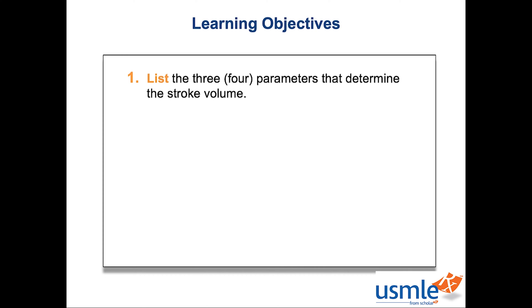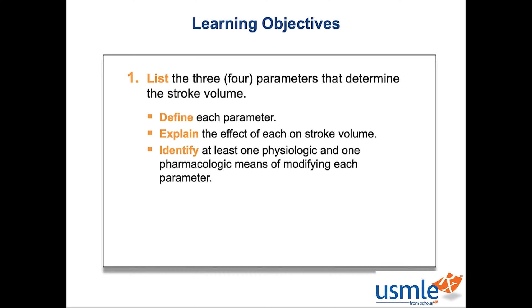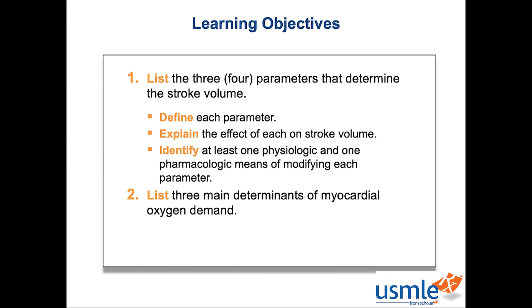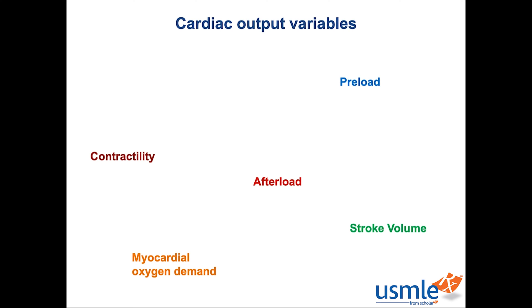By the end of this episode, you should be able to: 1. List the parameters that determine stroke volume — there are actually four of them, but First Aid lists three because the last one's relatively low yield, so I'll be satisfied with three. For each parameter, you should be able to define each one, explain the effect of each on stroke volume in approximate terms, and identify at least one physiologic and one pharmacologic way to modify each parameter. Finally, list three main determinants of myocardial oxygen demand. If you look in First Aid, you see a seemingly random collection of words along with their definitions and associated concepts, so the first thing we're going to do is put them all in context.